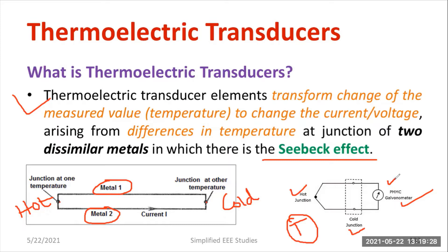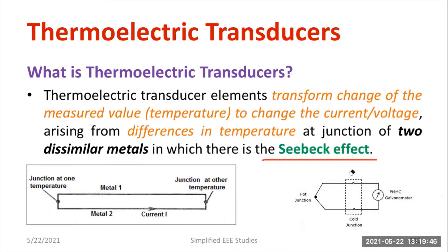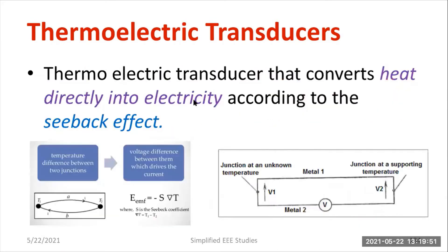For example, there is a permanent magnet moving coil galvanometer, so you can get the output either in terms of EMF or in terms of current. That is a specialty of the thermoelectric transducer — it obeys the principle of the Seebeck effect. The input is temperature and the output will be EMF.